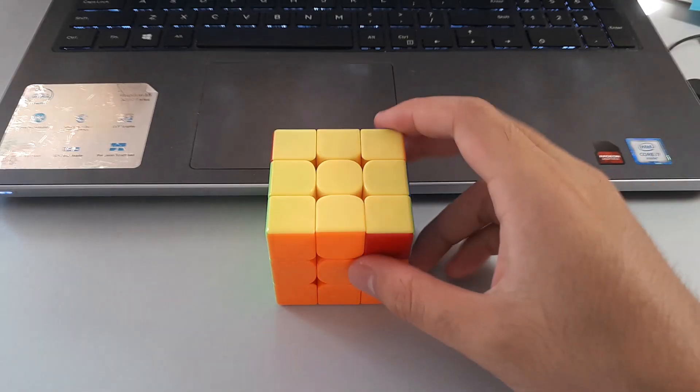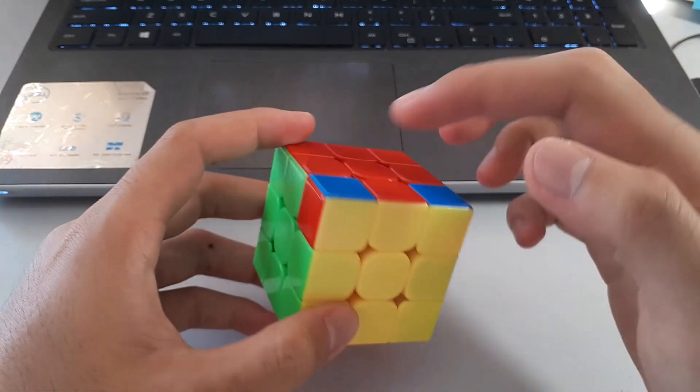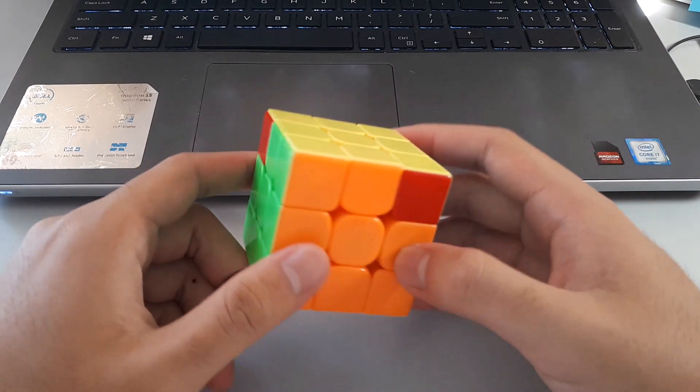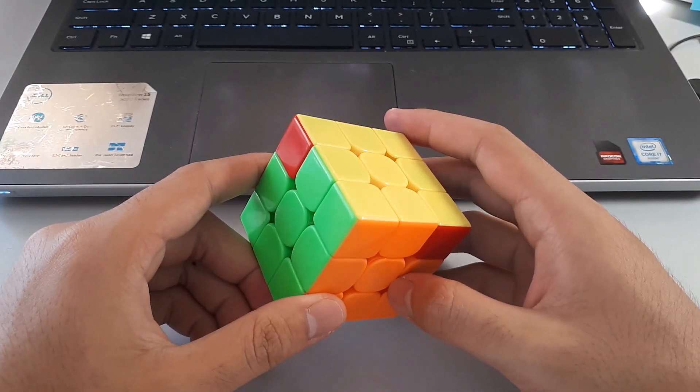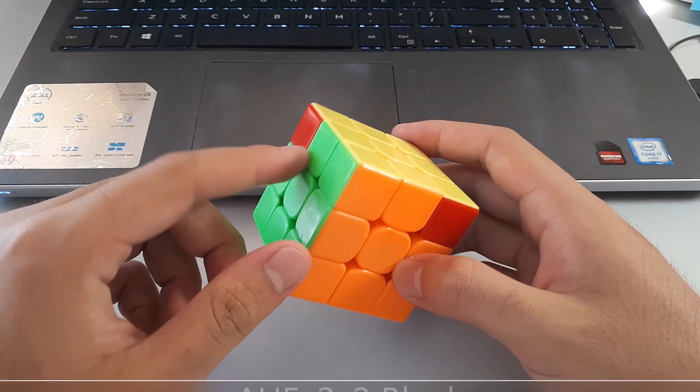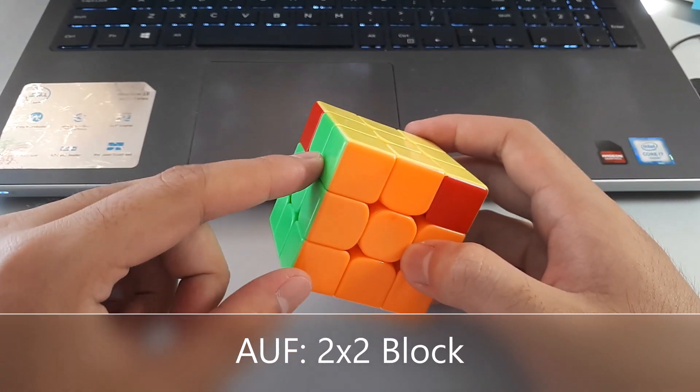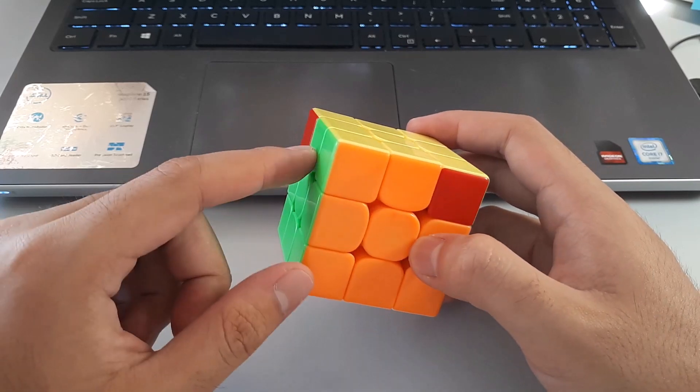Now for AUF, a lot of people might be tempted to look at the headlights, but that would be incorrect since the headlights do move around when you do the algorithm. In terms of AUF, the important thing is this 2x2 block. That stays where it is for AUF.